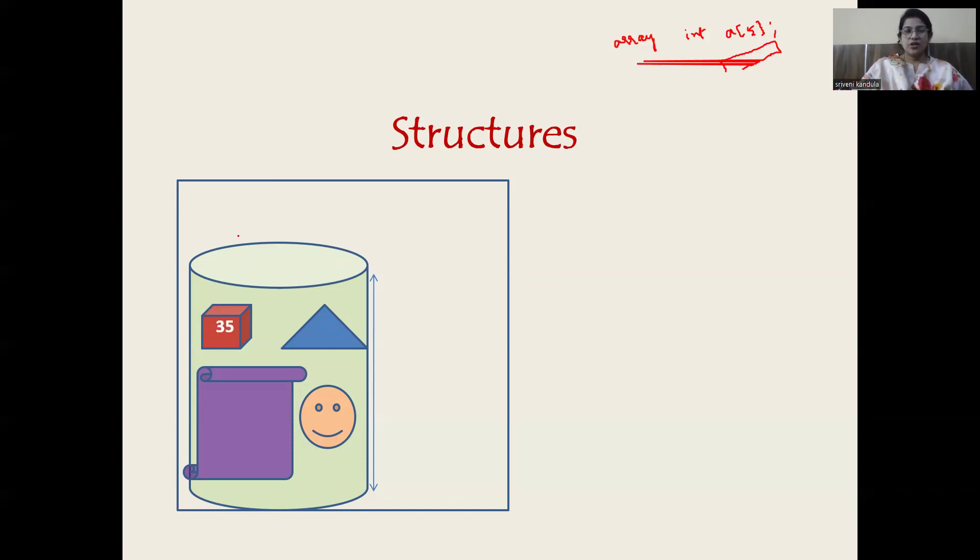Let us see what is meant by a structure. In the structure, I just want to store roll number, GPA of a student, name of a student, and the section he belongs to. I want to group all this dissimilar information, or in logical terms, I can call it heterogeneous data elements.